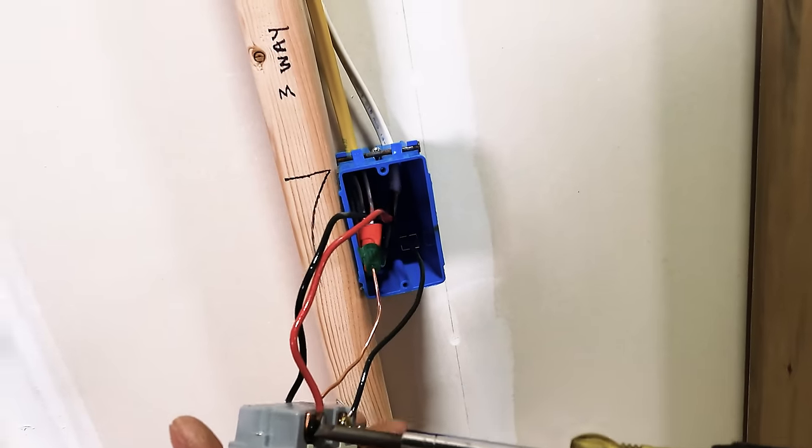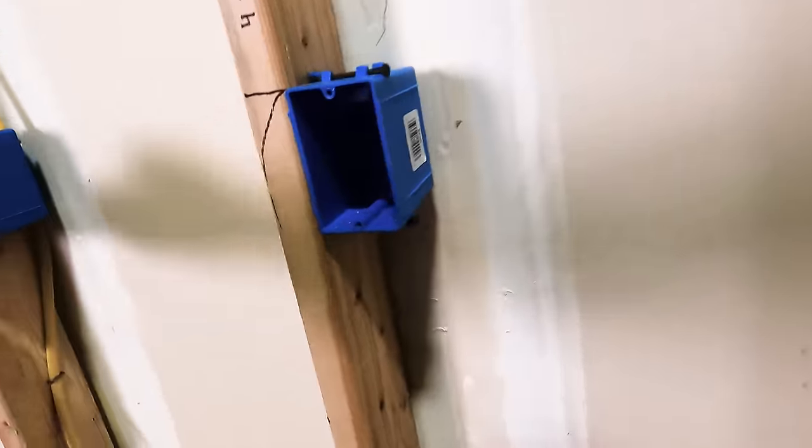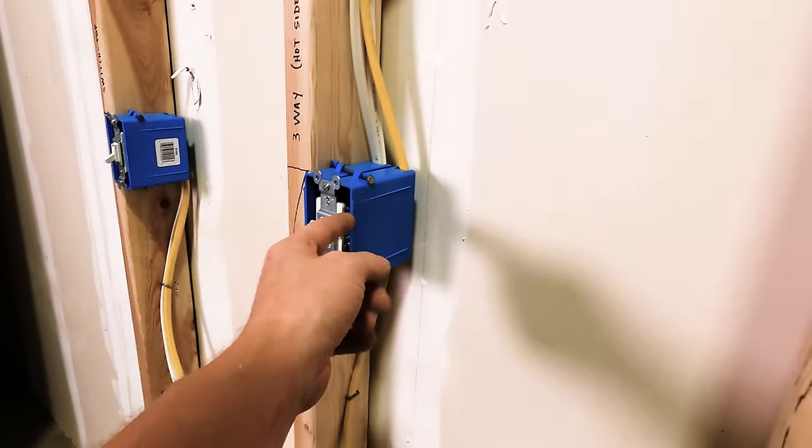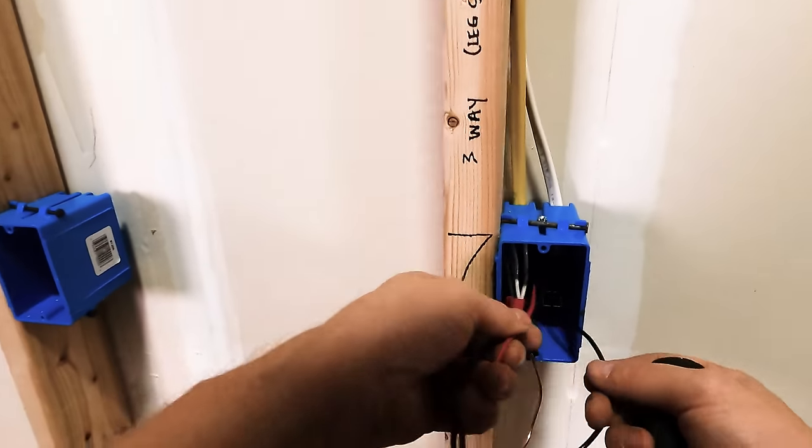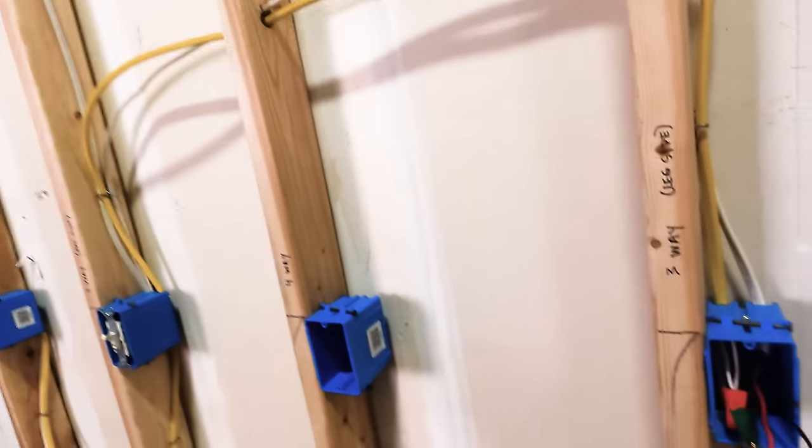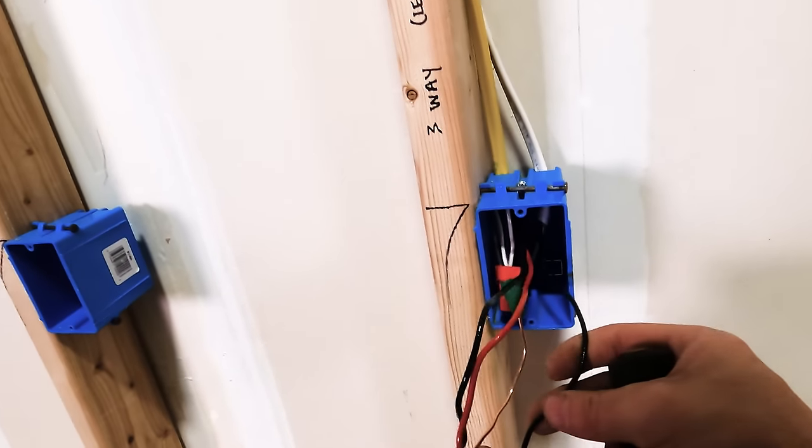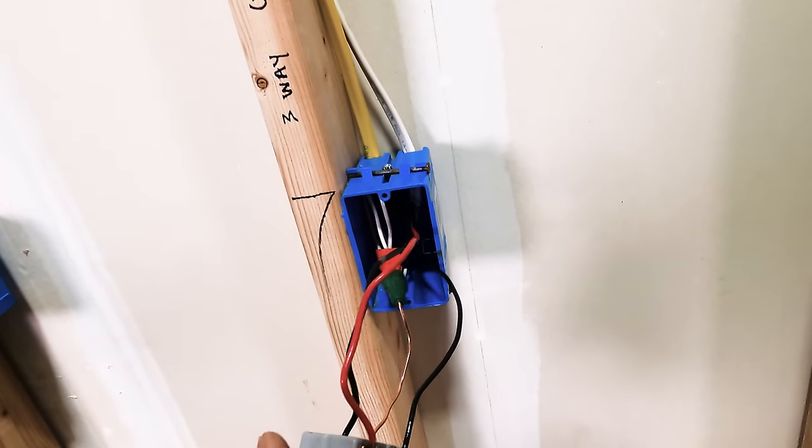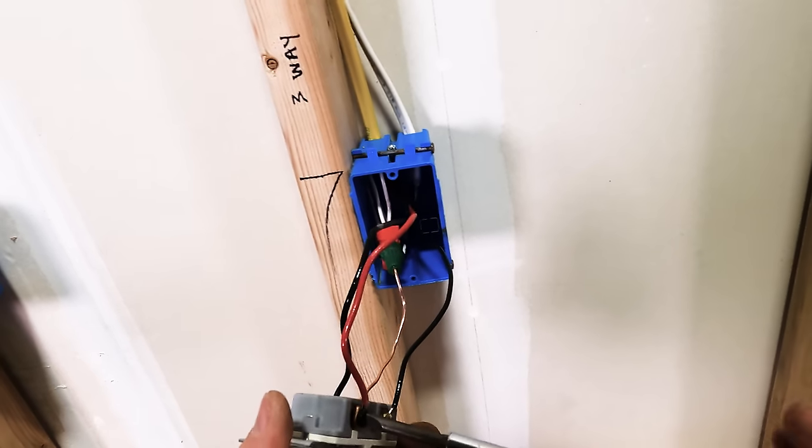Your switch leg and your hot on both sides of a three-way. This is your hot side. Your hot is always going to be on the black screw on this one. And your switch leg going up to the light is always going to be on your black side on this device. So let's just switch these two around.